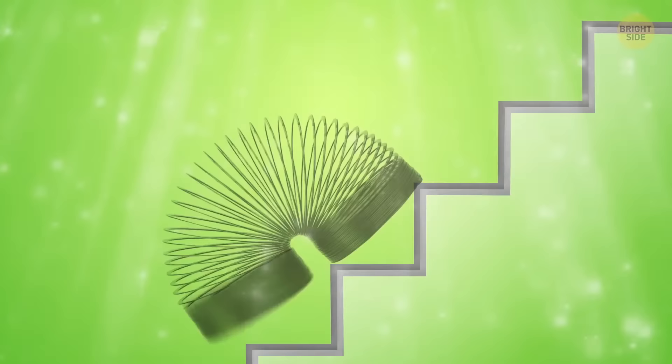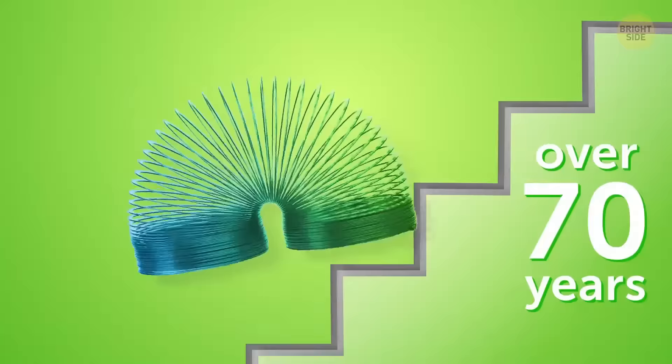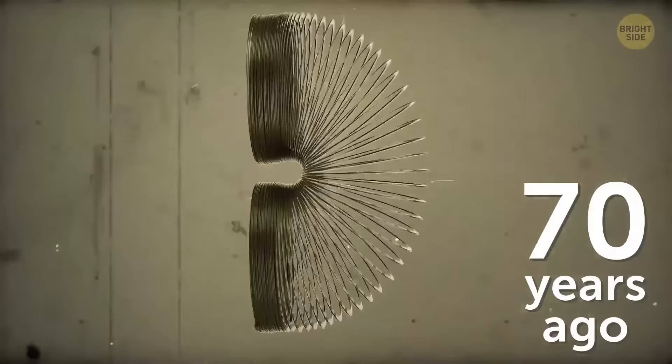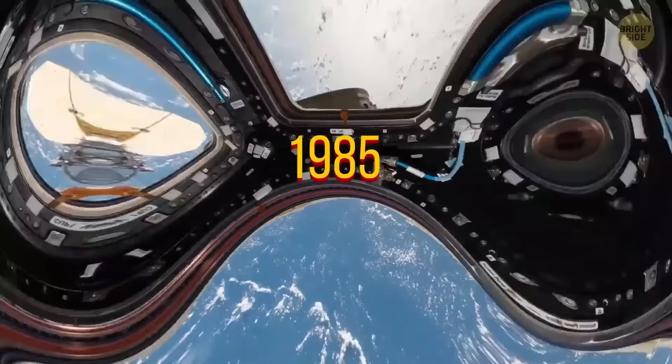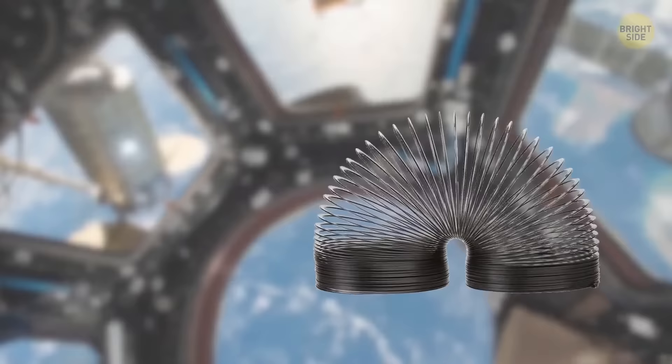What would childhood be without hours spent sending a slinky down a staircase? The popular toy has been around for over 70 years. But there's more to the slinky than stair-time fun and a lot of tangles. Its older metal version used to serve as a makeshift antenna for engineers and soldiers. And in 1985, one slinky even made it to space! Unfortunately, it refused to slink in zero gravity. Astronauts reported that it just drooped.